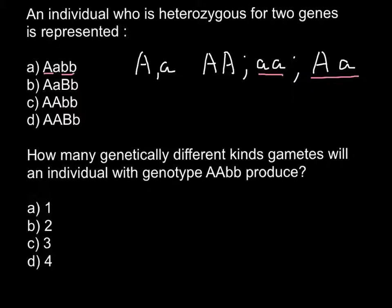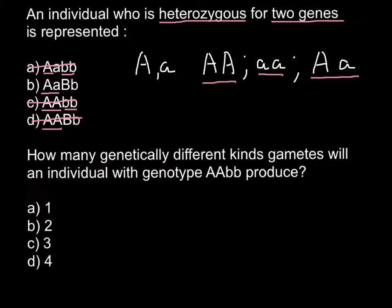So we are looking for the individual who is heterozygous for two genes. Let's check answer D — here we see one gene represented by two alleles and we also have homozygous dominant here, so we have to cross out this answer. As for answer A and answer C, we have once again homozygous dominant and homozygous recessive for the second gene, so we have to cross out those answers. What we are left with is answer B, where we have the first gene A represented by two alleles — one dominant, another one recessive — so this would be heterozygous, and the second gene also would be heterozygous. So this is our answer.